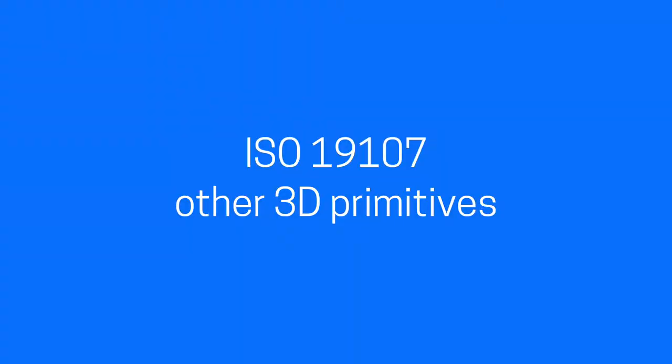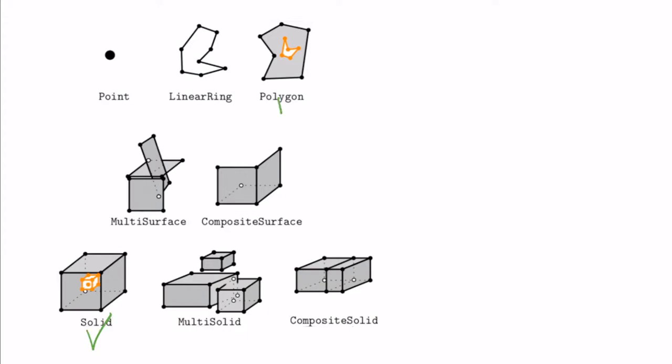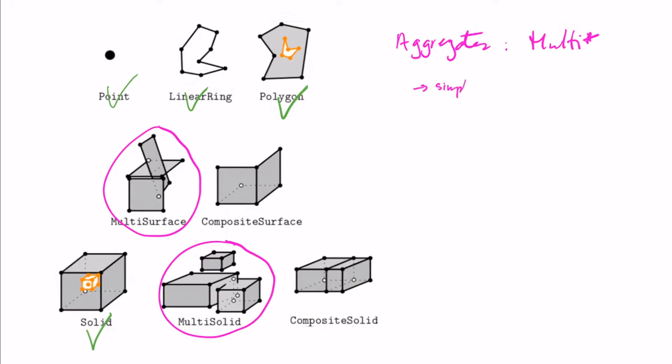Although we only cover solids in this small video, in the handout, more 3D primitives are explained. According to the 3D standards, we can combine different primitives into either aggregates or composites. So an aggregate, which is either a multi-surface or a multi-solid, is simply a container for different primitives of the same dimensionality.